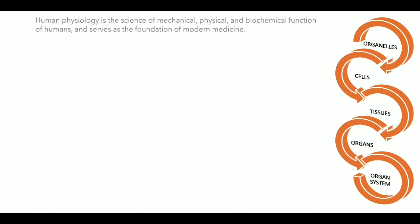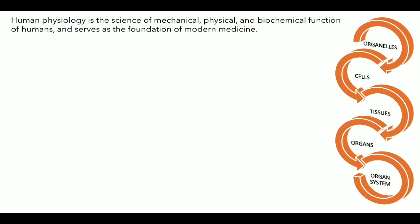The study of the human body involves anatomy, physiology, histology, and embryology. Here we will talk about human physiology. Human physiology is the science of mechanical, physical, and biochemical functions of humans and serves as the foundation of modern medicine. It is made up of two words: first is physis, meaning nature, and second is logos, meaning study. So physiology is the scientific study of functions and mechanisms in a living system.